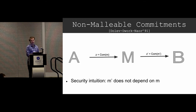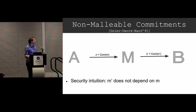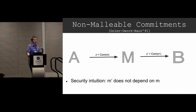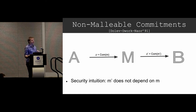For non-malleable commitments, the way we model them is this adversary man-in-the-middle experiment where he plays two protocol executions. On the left, he receives a commitment to M from Alice, and on the right, he sends a commitment to M prime to Bob. The security intuition we're going for is that M prime doesn't depend on M — the message on the right is independent from the message on the left.